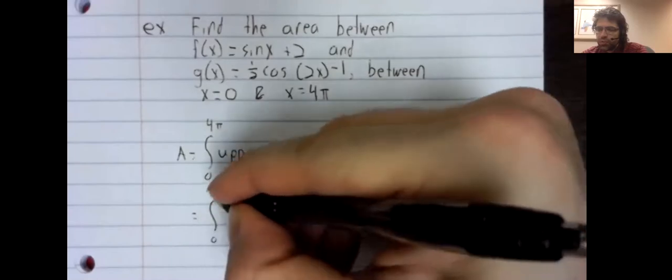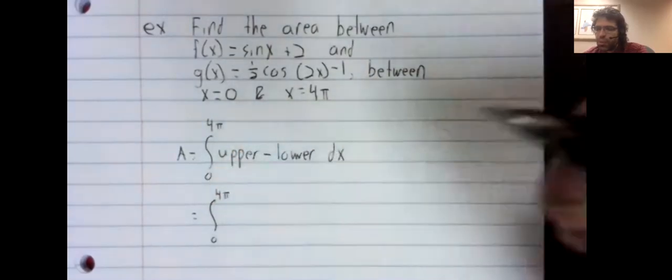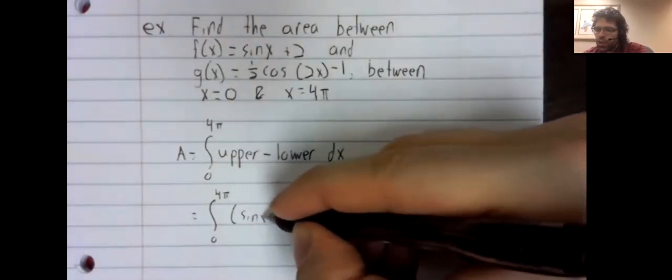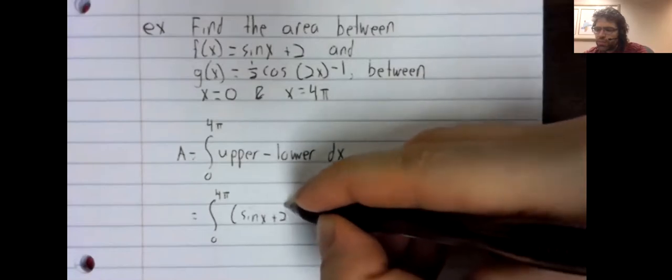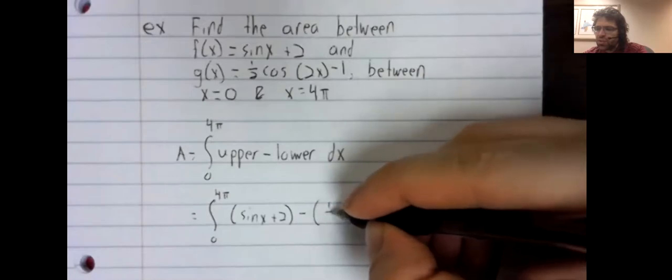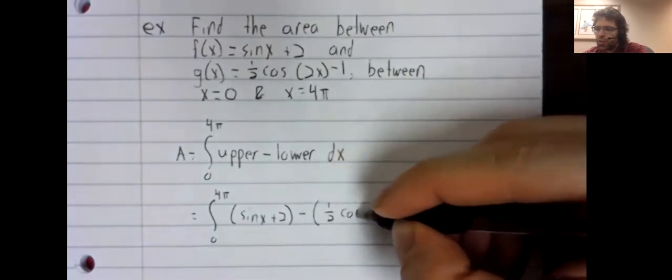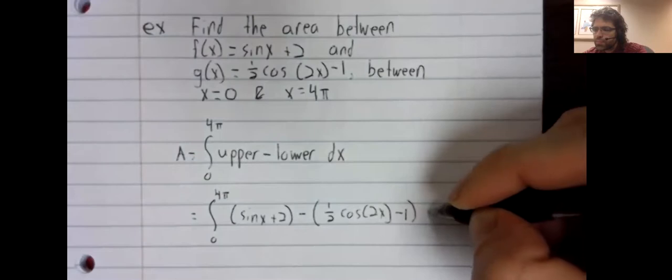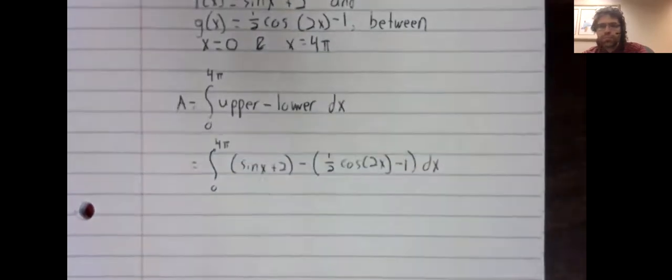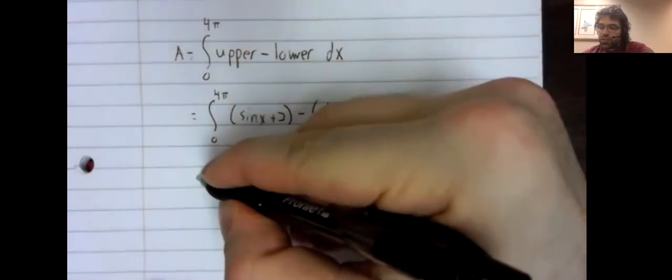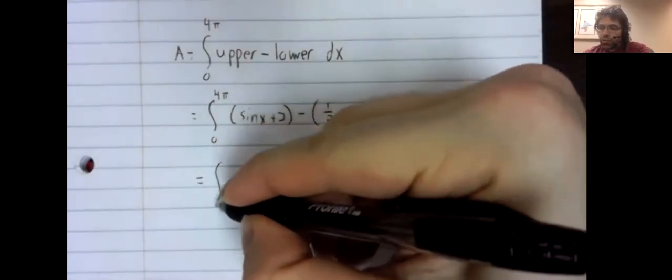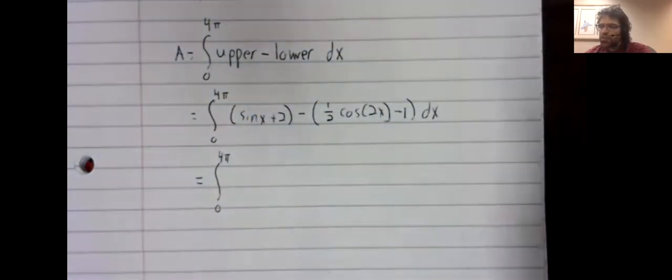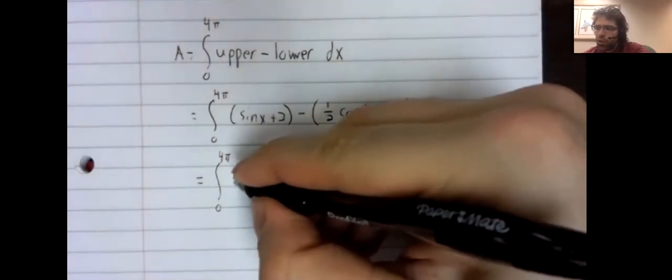So the integral from zero to four pi of the upper function minus the lower function. And now it's finding this integral, if we can. And this doesn't simplify a whole lot.